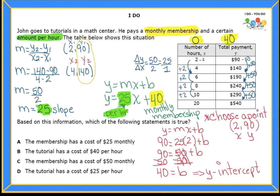So let's look at the answer choices. Let's see if you can find which one represents that. Do you find it? It cannot be letter A, because letter A says the membership has a cost of $25 monthly. And we know that that's not true. It's actually $40. So keep on reading the answer choices. Did you find the one that matches our problem? Yes, the answer should be letter D. Very good, guys.